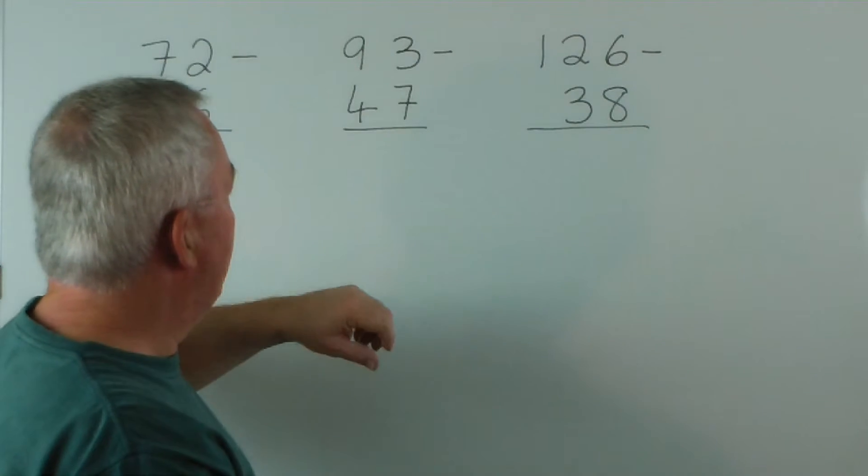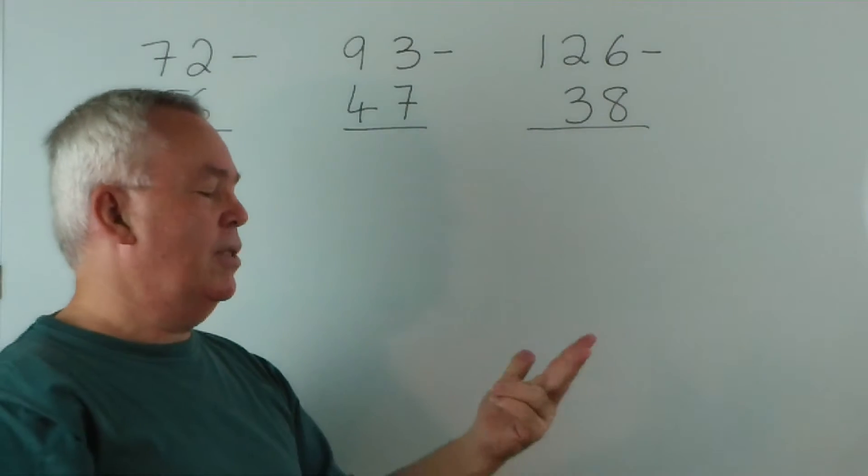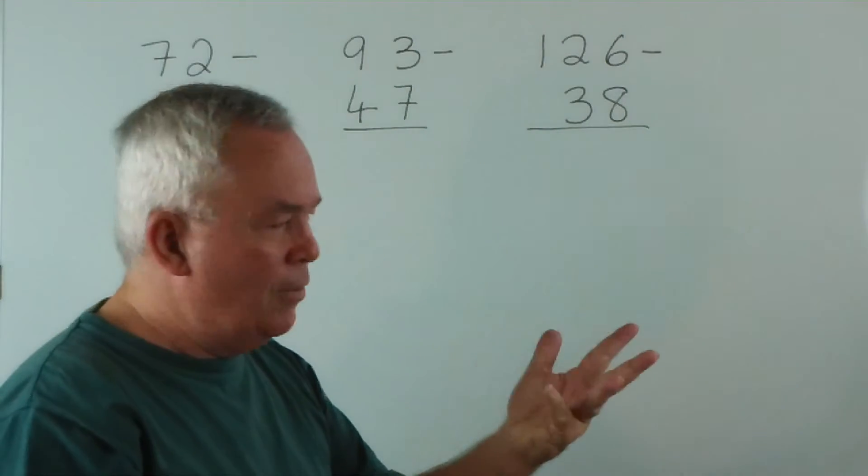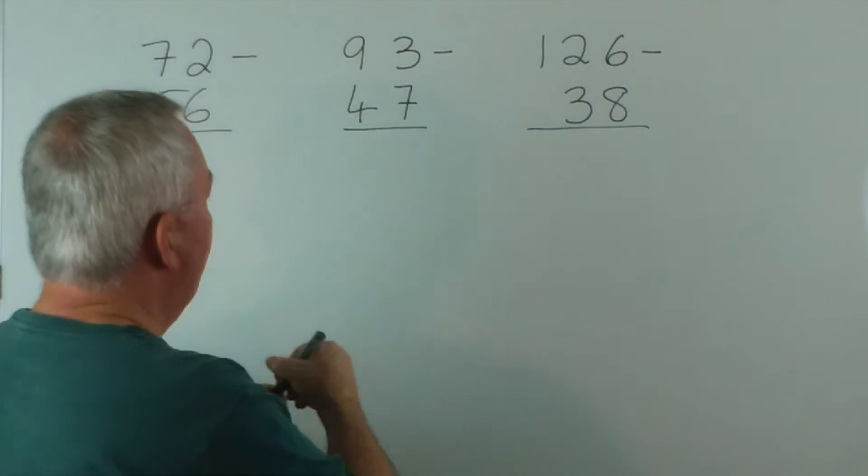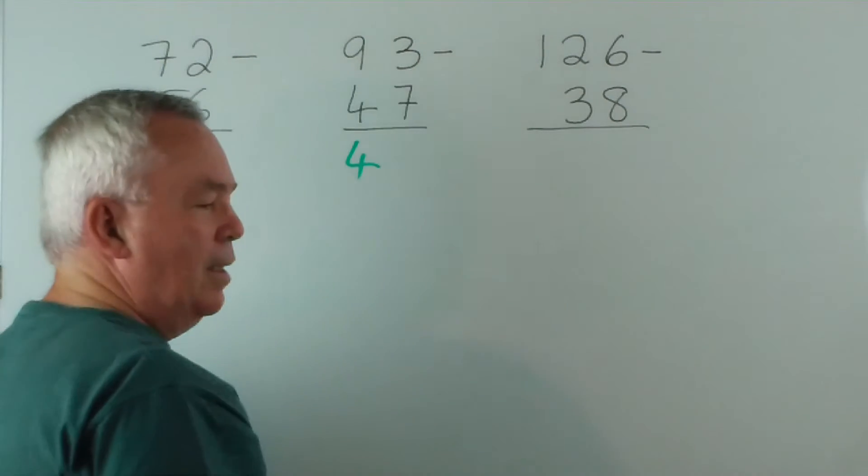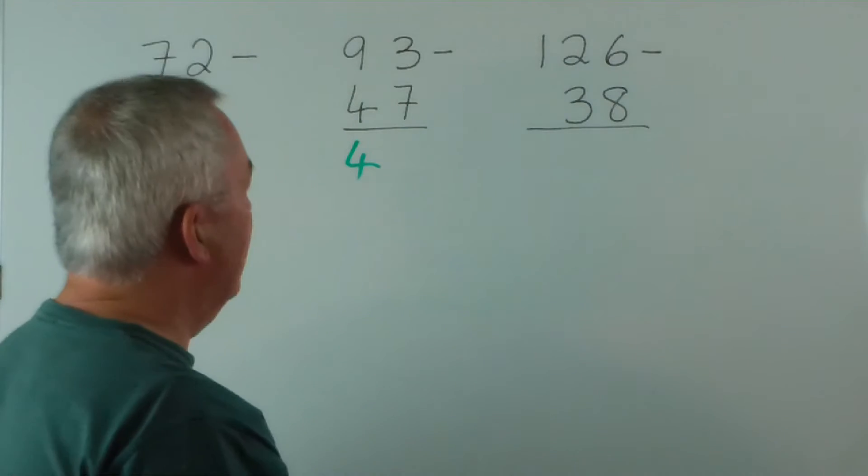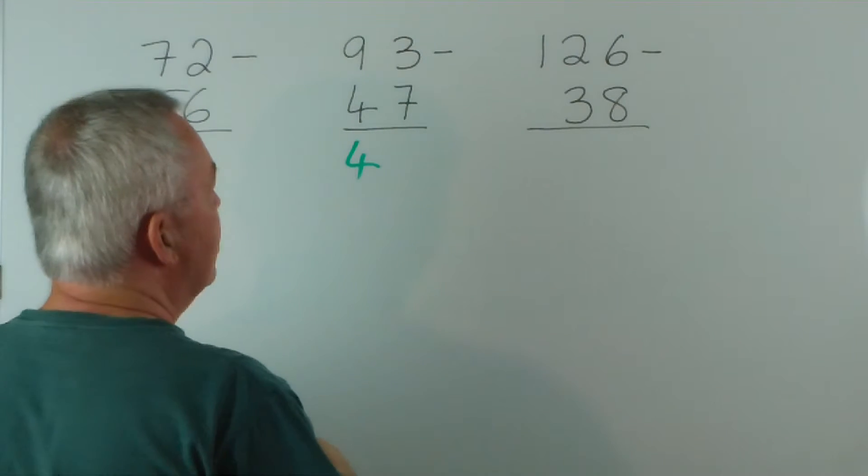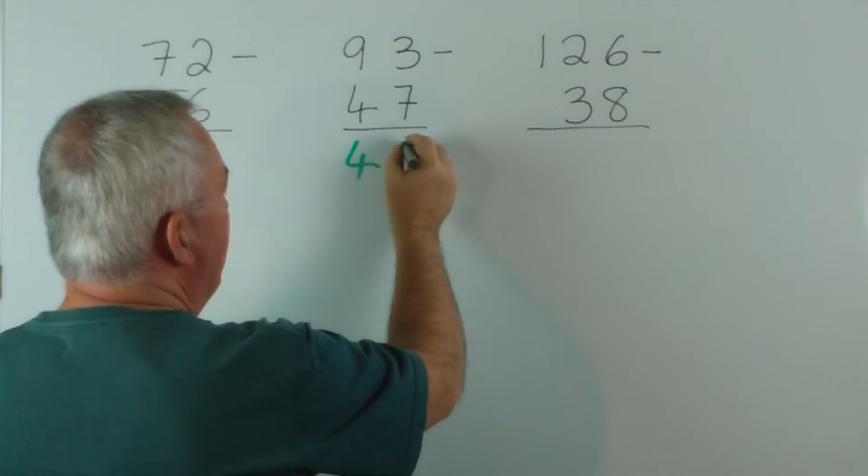Now, from 47 up to 93, we'd go 57, 67, 77, 87. We don't want to go to 97, so we went up by 40. And from 7 up to 13, or if you like, from 87 to 93, would be a gap of 6.